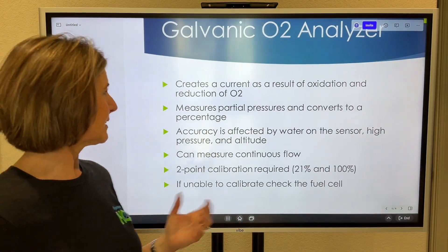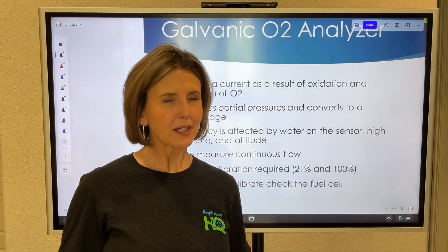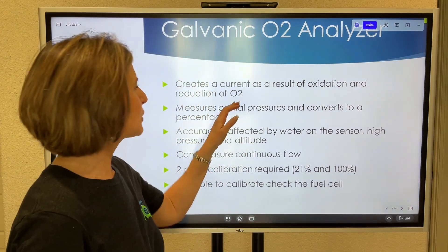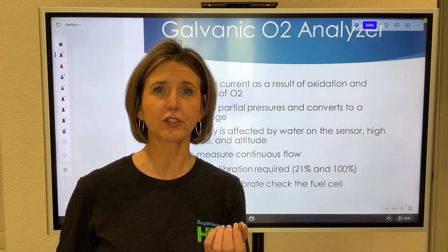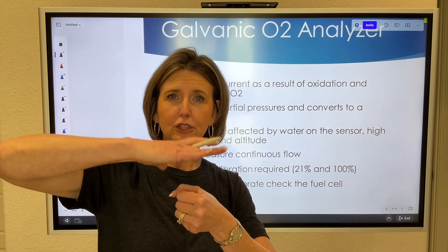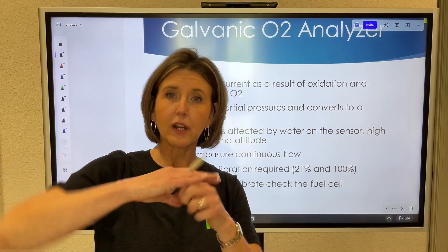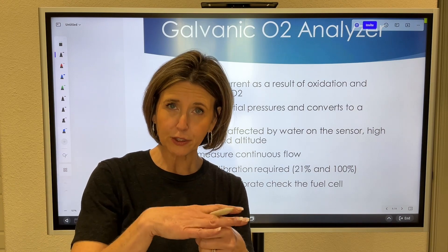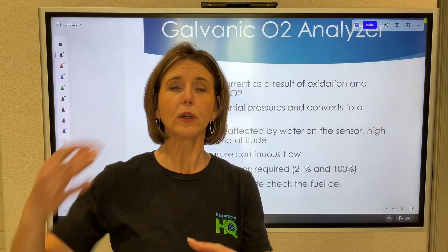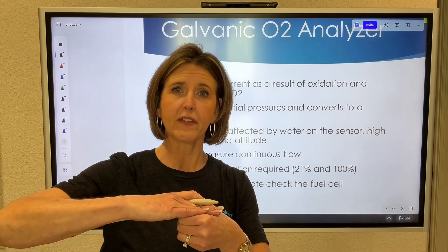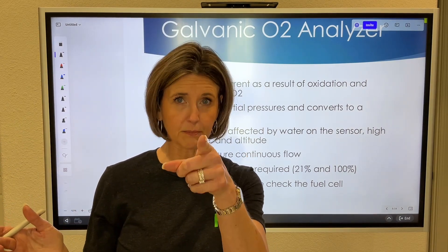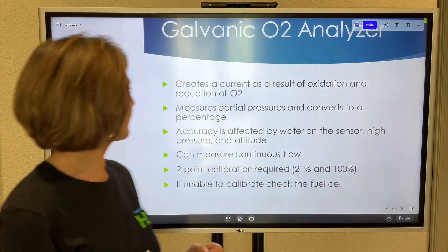What you need to understand is it doesn't actually measure the FiO2 directly — it measures the partial pressure of oxygen. The partial pressure of oxygen in the atmosphere bears down on that sensor, the sensor picks up the pressure and converts it to an FiO2. So the more pressure on top of that sensor, the higher the FiO2 is going to read. This is important to know for troubleshooting.